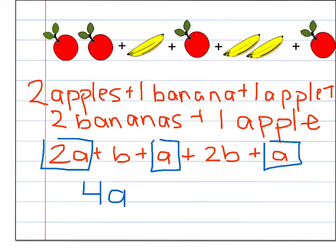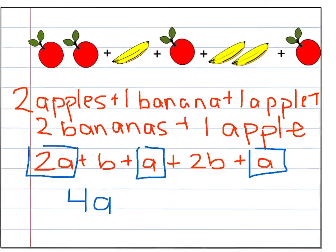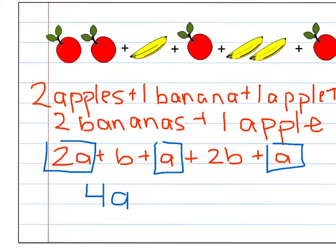And then if I am looking at the number of bananas I have, I would have one here and one here. And so that would give me three bananas. So once I combine it all together, I can put my apples together, I can put my bananas together, and I would say that I have four apples plus three bananas.